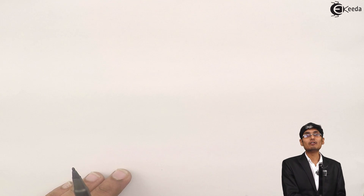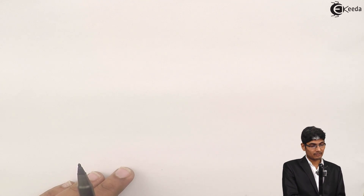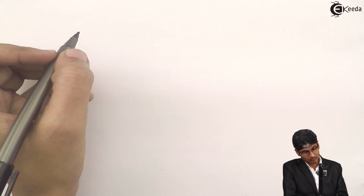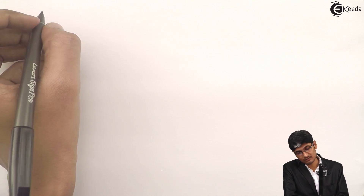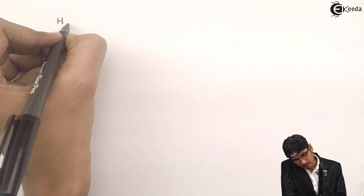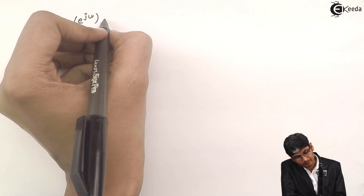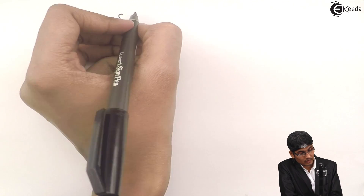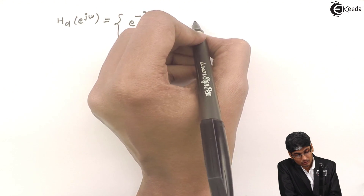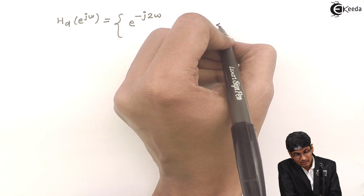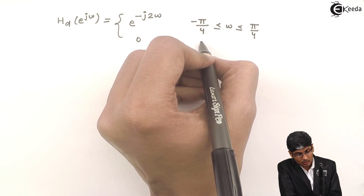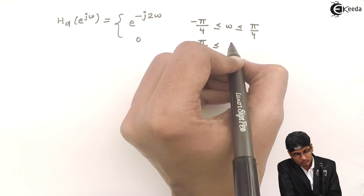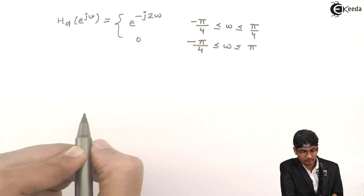Hi friends, let us see how to use the windowing technique in designing an FIR filter. Let us take an example. The given data is: design an FIR filter for the given prescribed characteristics. It has been given that H_D(e^{jω}) = e^{-j2ω} for -π/4 ≤ ω ≤ π/4, and 0 for π/4 ≤ |ω| ≤ π.